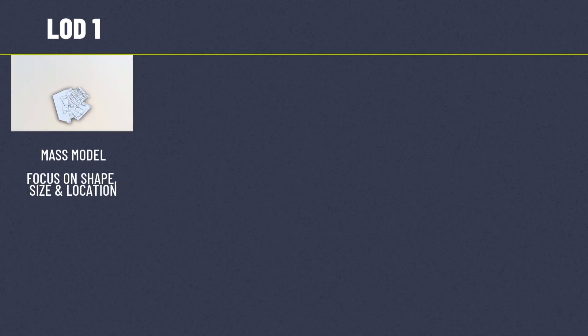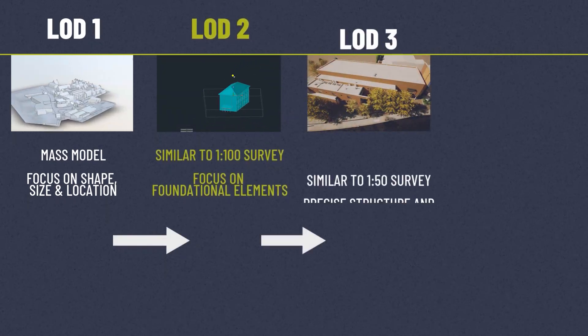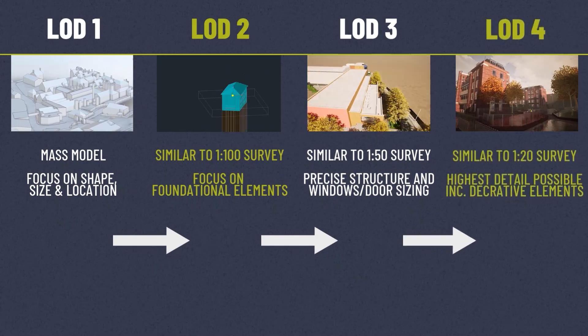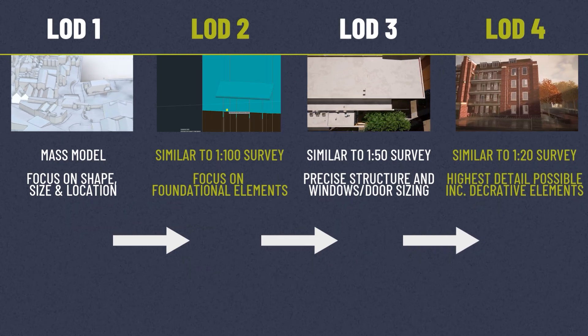From LOD1 to LOD4, each level serves a specific purpose tailored to the needs of the project. Whether you're in the early stages or managing a complex heritage restoration, understanding these differences will ensure you get the right information at the right time. Each LOD offers a unique combination of detail, usability and application. A good surveyor will have the experience to help guide you through the right level of detail and can even suggest tailoring the model to your needs.